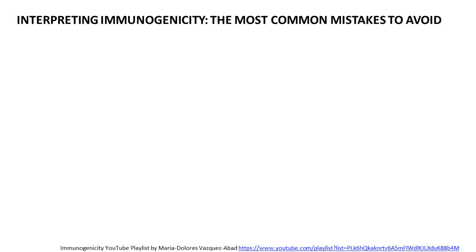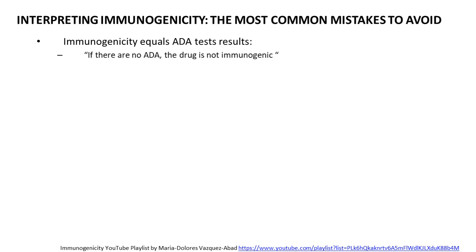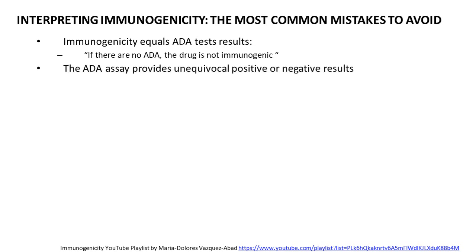What are the most common mistakes to avoid when interpreting immunogenicity? This could be from the clinical perspective, whether you're seeing a patient or interpreting data from package inserts, instructions for use, or clinical trials. First: immunogenicity equals ADA test results. Another way I've seen this written is: if there are no anti-drug antibodies, then the drug is not immunogenic. Also: the anti-drug antibody assay provides unequivocal positive or negative results — people see results and believe they are true positives or true negatives.